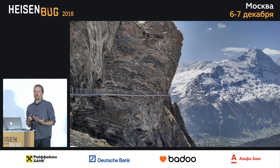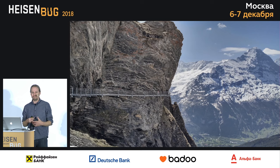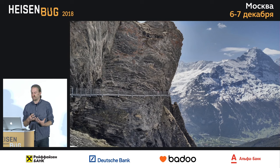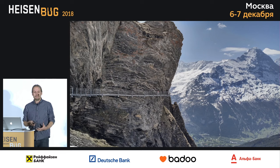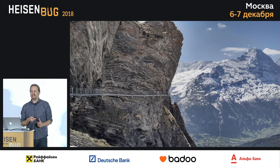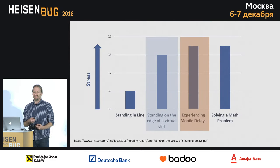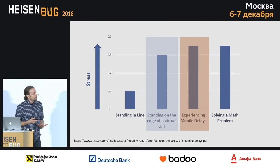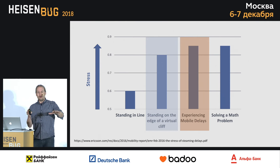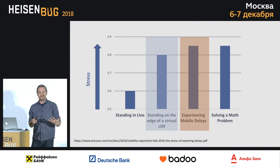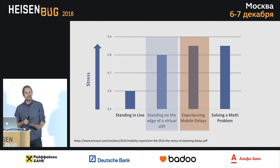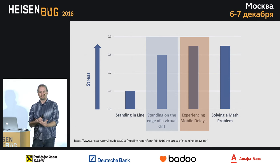Ericsson, two years ago, did a study where they attached sensors to people and measured stress levels in response to different situations. They found that standing on a cliff raised people's stress responses. But interestingly, they found that a slow mobile experience is actually more stressful than standing on the edge of a cliff. So that feeling you had a moment ago about thinking about standing on the edge of a cliff — if you have a slow mobile app, your customers are feeling that same experience.